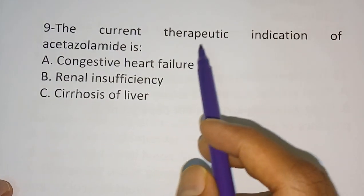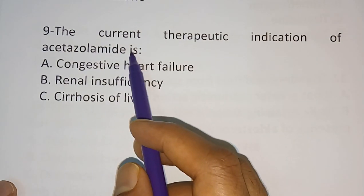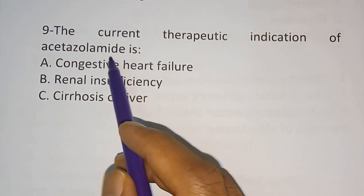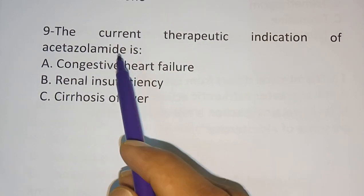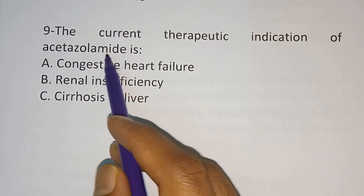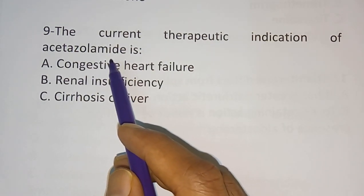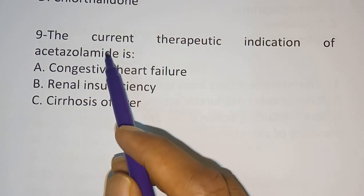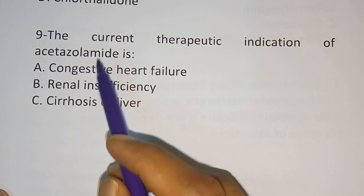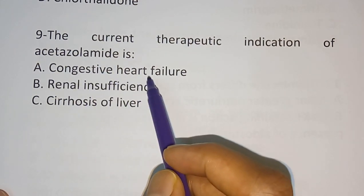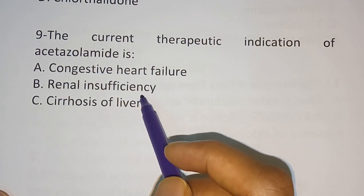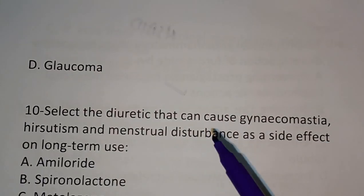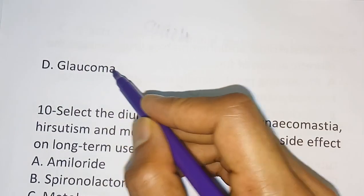Question number nine: The current therapeutic indication of acetazolamide — we know acetazolamide is a carbonic anhydrase inhibitor, which we studied in the glaucoma video. Options are: congestive heart failure, renal insufficiency, cirrhosis of the liver, and glaucoma. The correct answer is glaucoma.